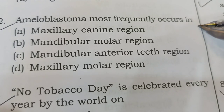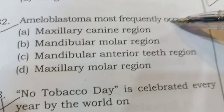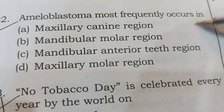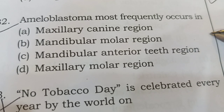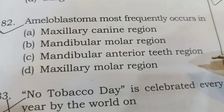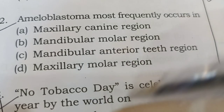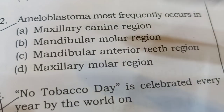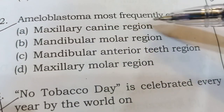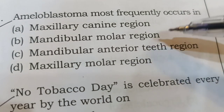Next question: Ameloblastoma most frequently occurs in. Your options are: A) Maxillary canine region, B) Mandibular molar region, C) Mandibular anterior teeth region, or D) Maxillary molar region. Ameloblastoma most frequently occurs in the mandibular posterior region, so mandibular molar region is the correct answer. Option B is the correct answer.